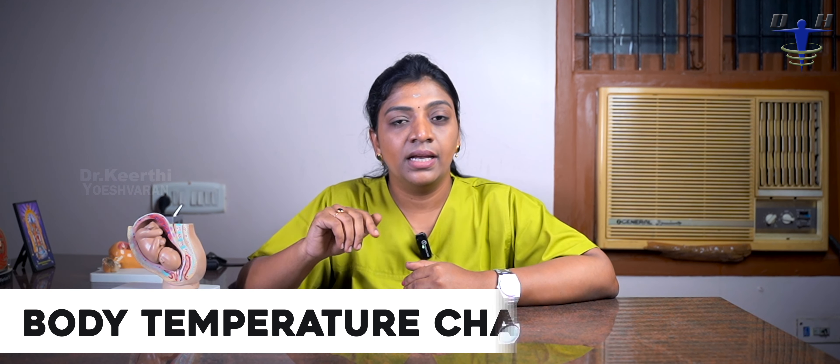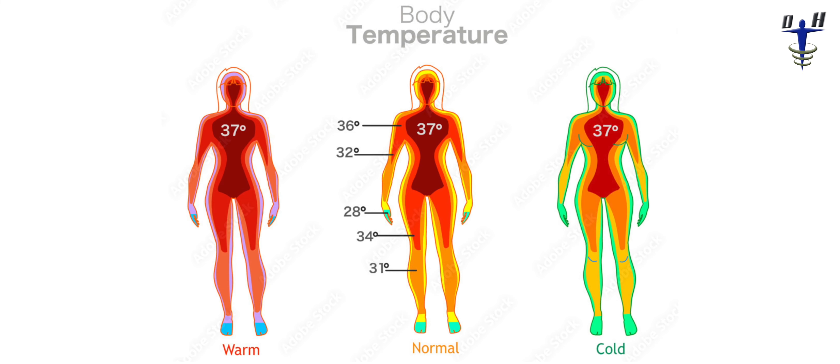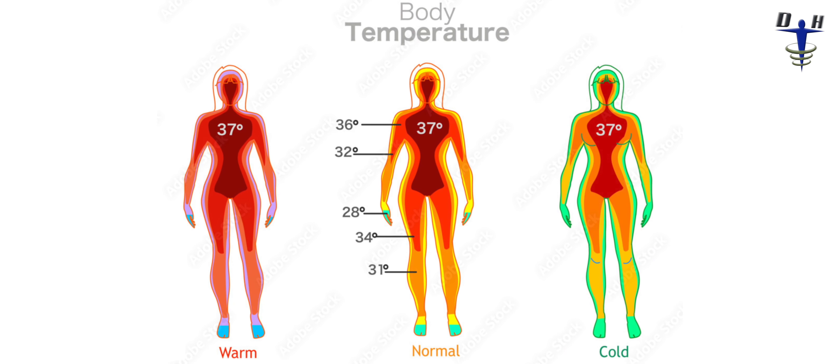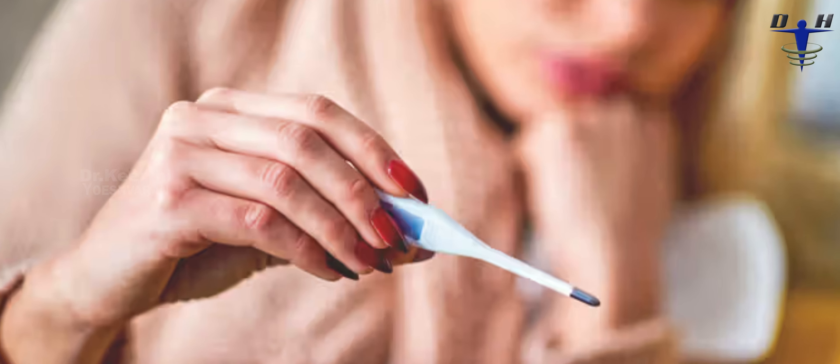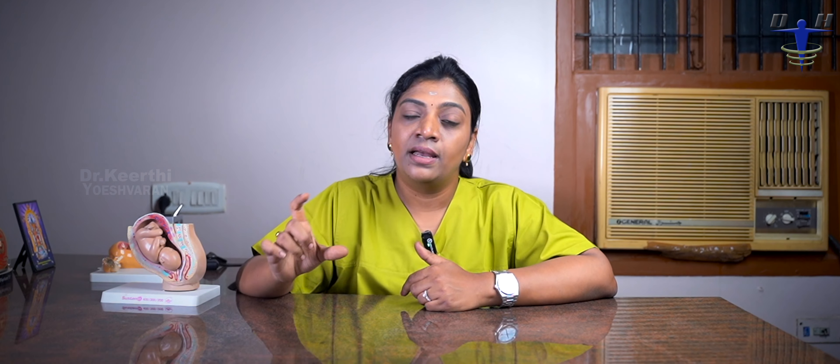The third method is the Basal Body Temperature Chart. Normally, we have to measure the body temperature. If we measure that, at the 13th or 14th day, our body temperature will increase by a small amount for one day. If we track that one day, we can assess the ovulation time.